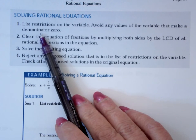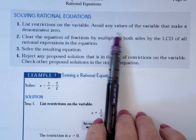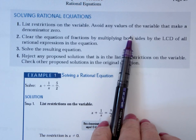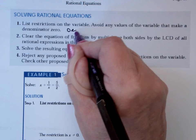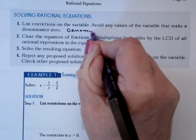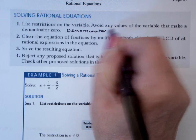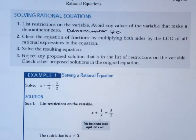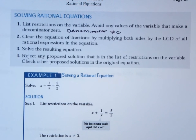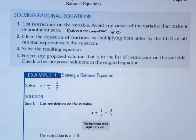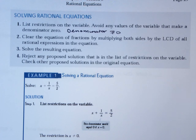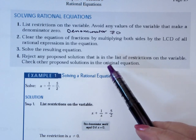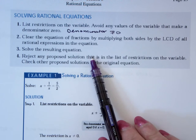It says, list the restrictions on the variable and avoid any values of the variable that make the denominator zero. Remember, that means the denominator can't be zero. Clear the equation of fractions by multiplying both sides by the LCD of all the rational expressions. Three, solve the resulting equation.